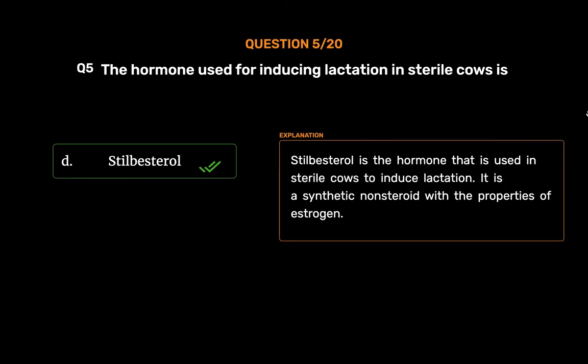Stilbestrol is the hormone that is used in sterile cows to induce lactation. It is a synthetic non-steroid with the properties of estrogen.